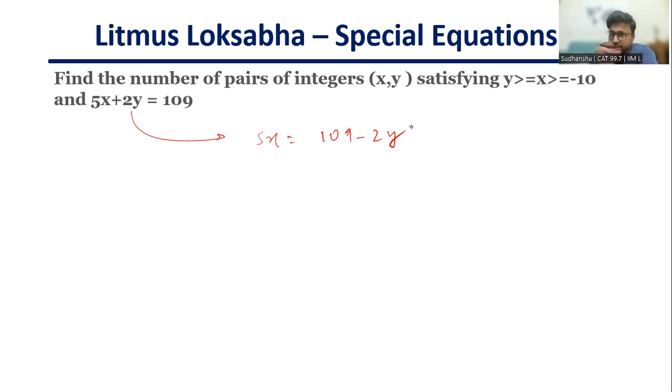First step: take one of the variables to the other side. After that, mark x and y. I have to find out the solutions. Only thing that we have to do is find out one solution to this problem and then everything can be auto calculated. Let's say that I put y is equal to 1, I will get 107 here which is not divisible by 5. If I put y is equal to 2, I will get 109 minus 4 which is 105. Now 105 is divisible, so I found the first solution: if I put y is equal to 2, this becomes 105 which is 21 times 5, so x becomes 21.